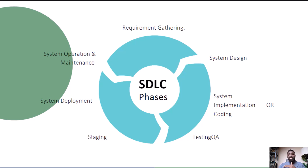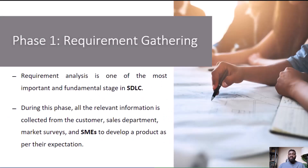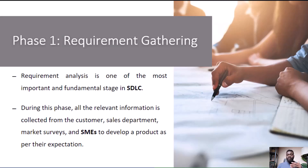Here are the phases. Requirement gathering: in this initial phase, developers work closely with stakeholders — those who have an interest in the software — to gather and document what the software needs to do. It's like creating a digital to-do list for the project.